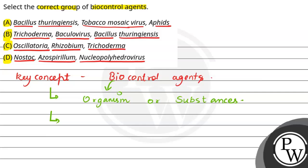Organisms and we use them to control pests, pest control, disease control, and weed control. We use them as biocontrol agents. Now let us look at one by one options.